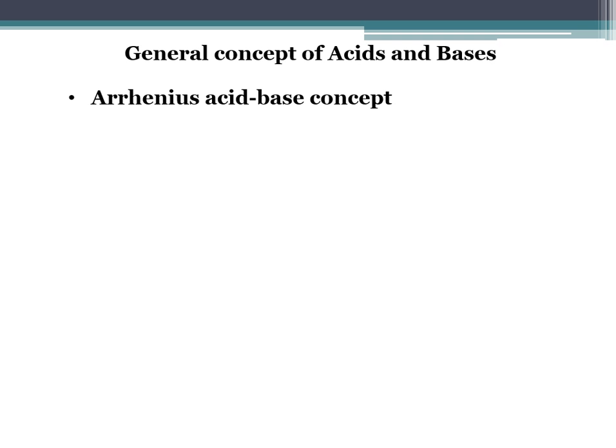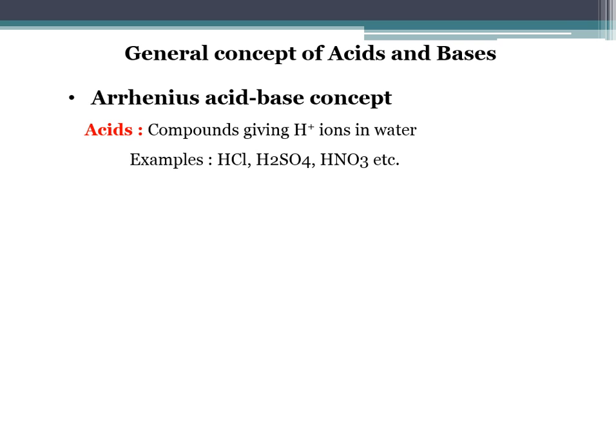Now we will go to the first concept: the Arrhenius acid-base concept. According to this concept, acids are those compounds which give the H⁺ ion in water. Examples include hydrochloric acid, sulfuric acid, and nitric acid. When hydrochloric acid is dissociated in water, it gets converted into H⁺ and Cl⁻ ions. According to the definition of Arrhenius acid, the molecule which gives H⁺ ion is called an acid.